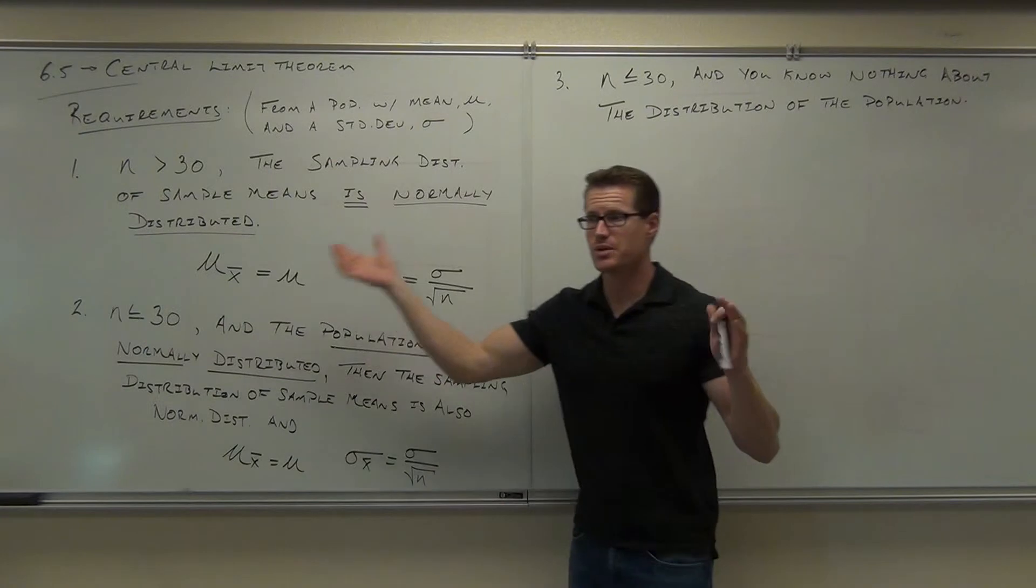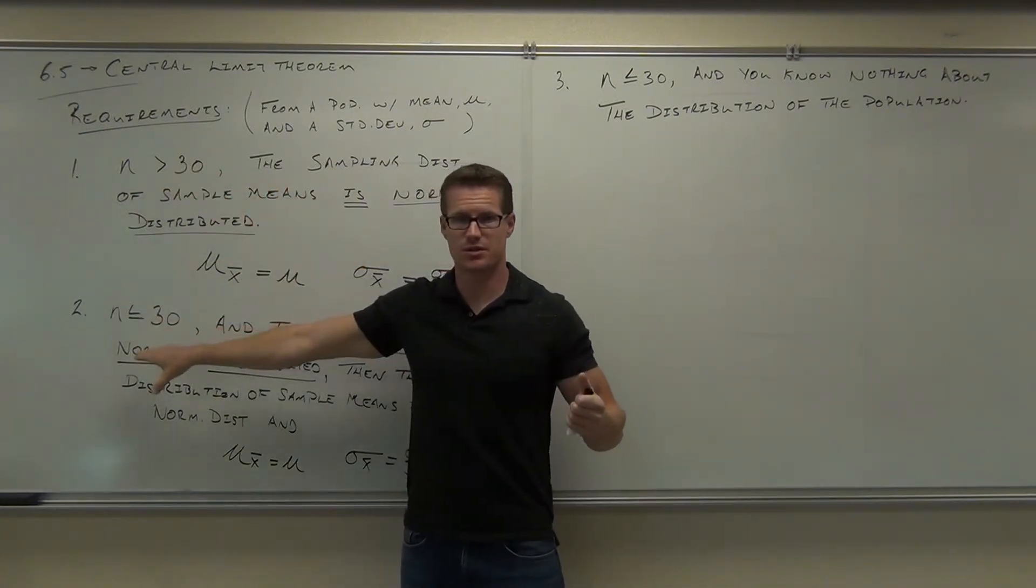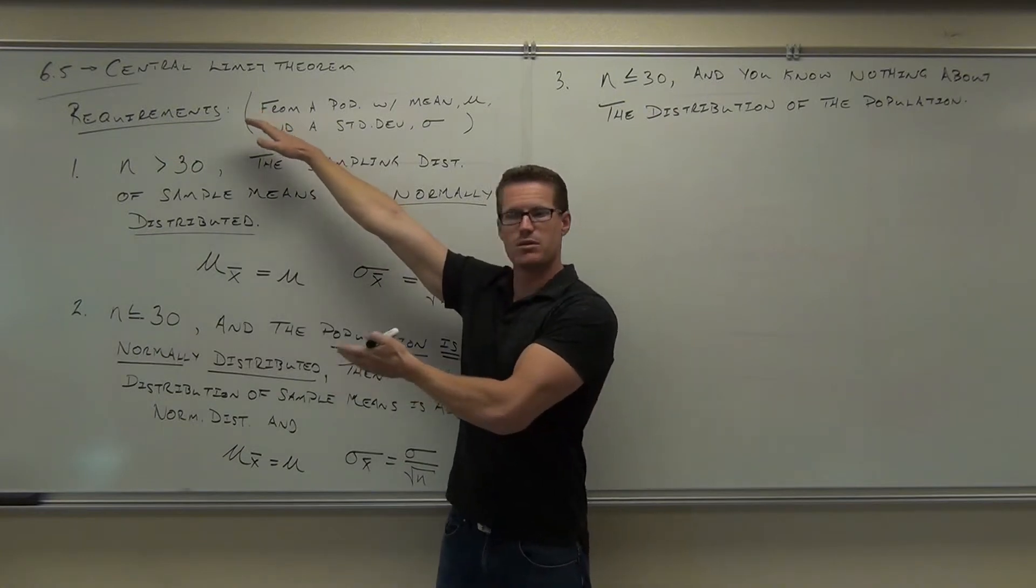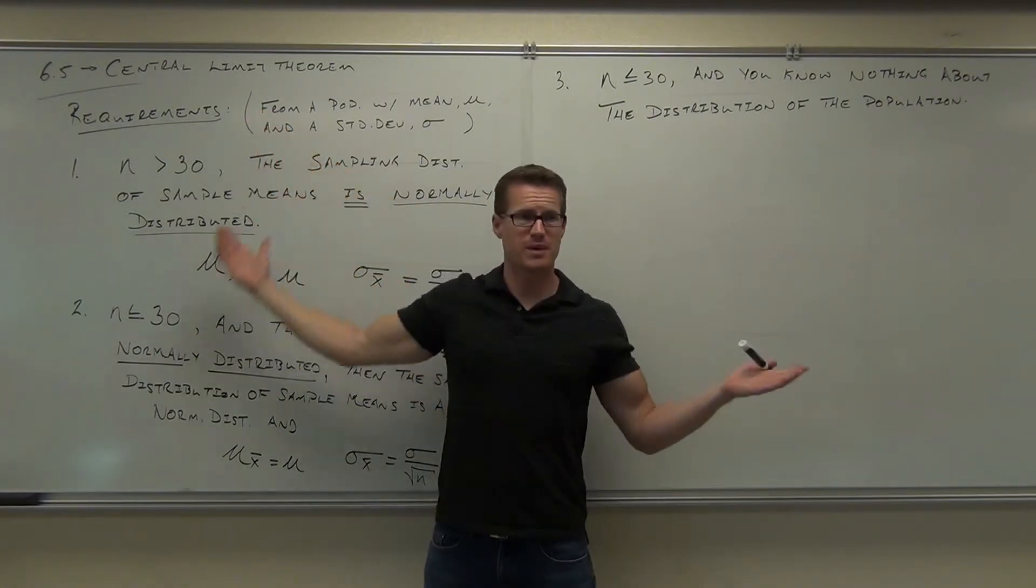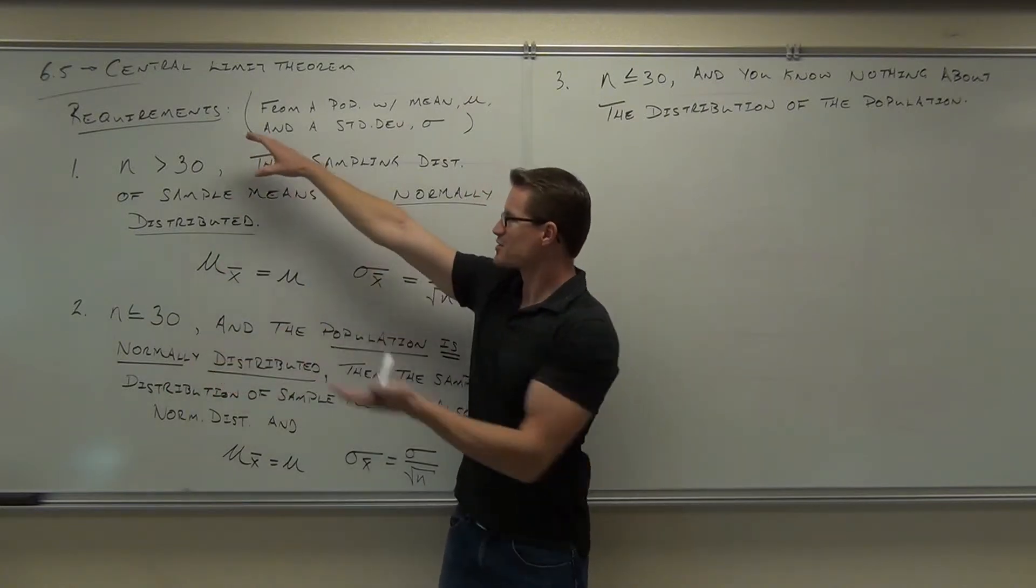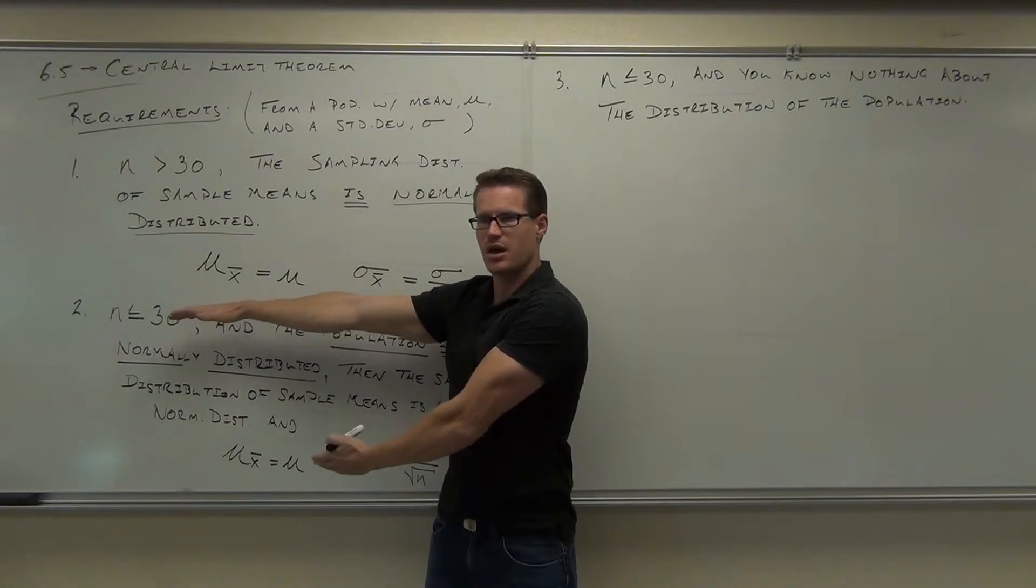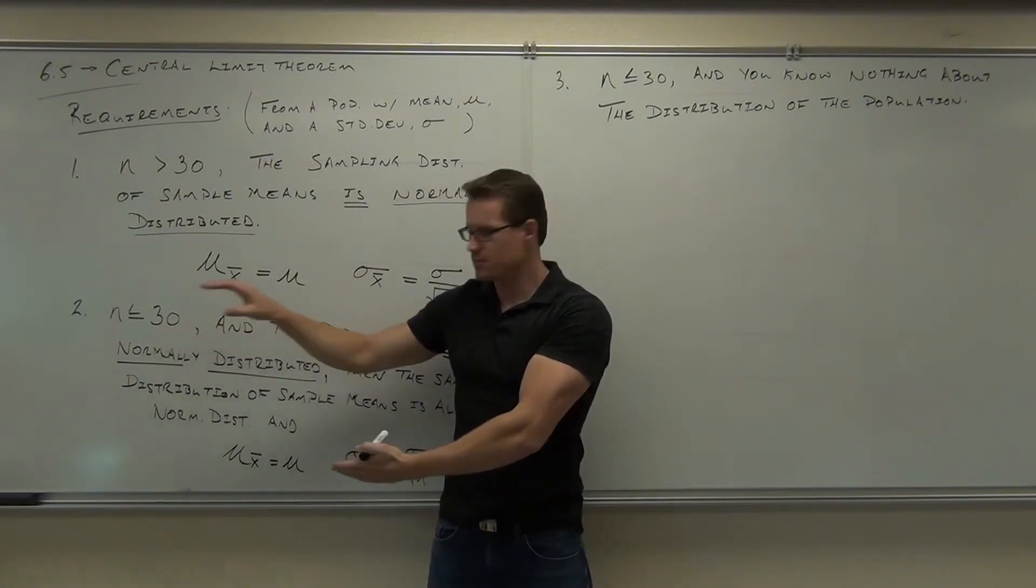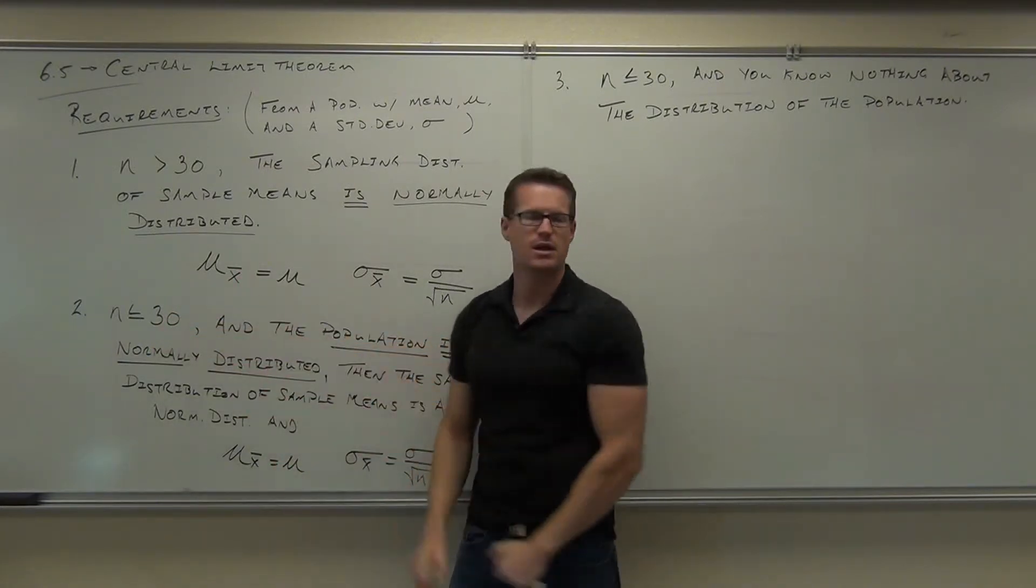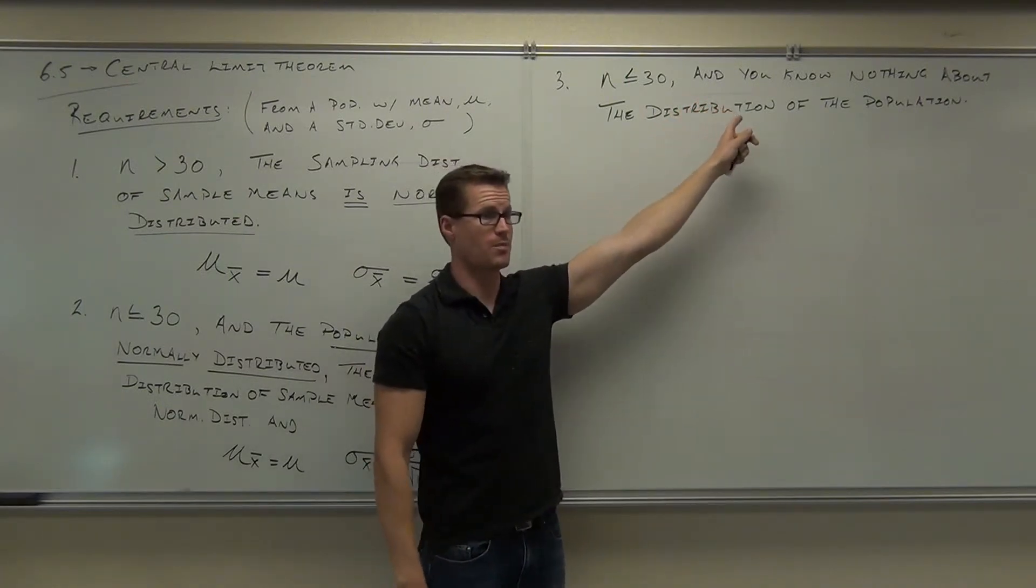Notice that these are the only three cases you can have. You either have n's bigger than 30 or n's less than 30. If n's bigger than 30, no problems, no worries mate, you've got this. If n's less than or equal to 30, have two cases. One, if the population is normally distributed, no problem, you've got this. If the population is not normally distributed, or you don't know anything about the population,